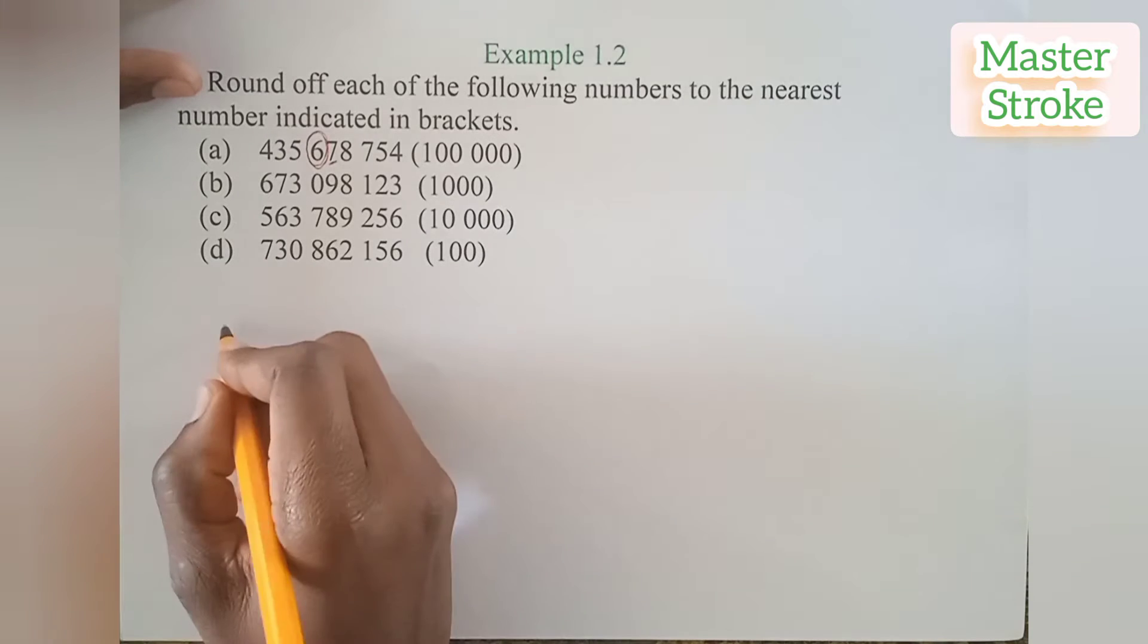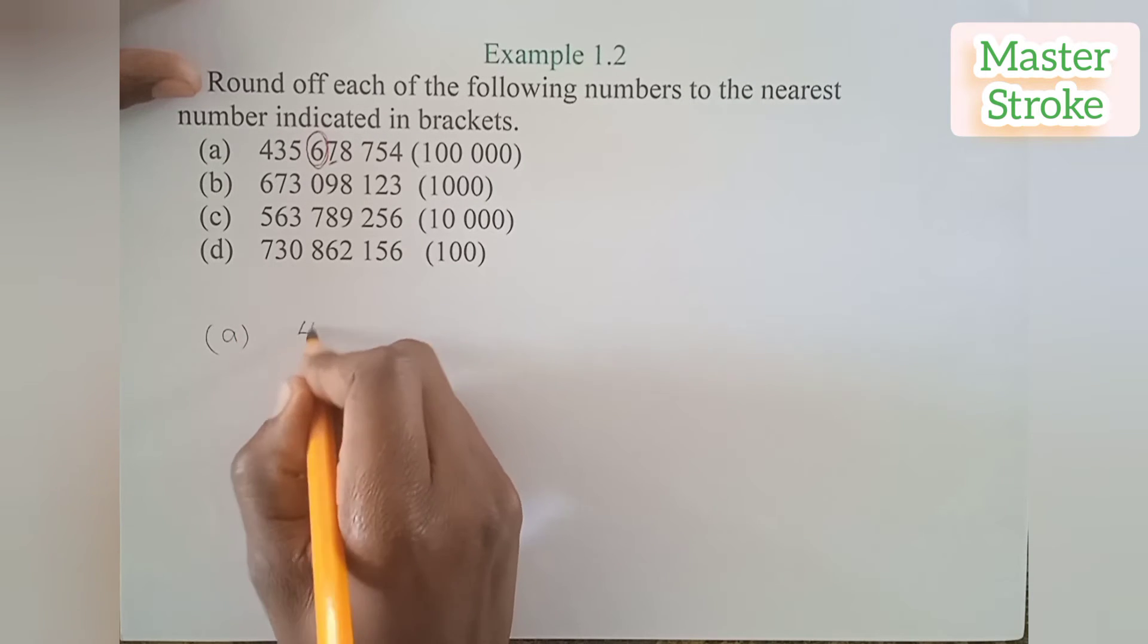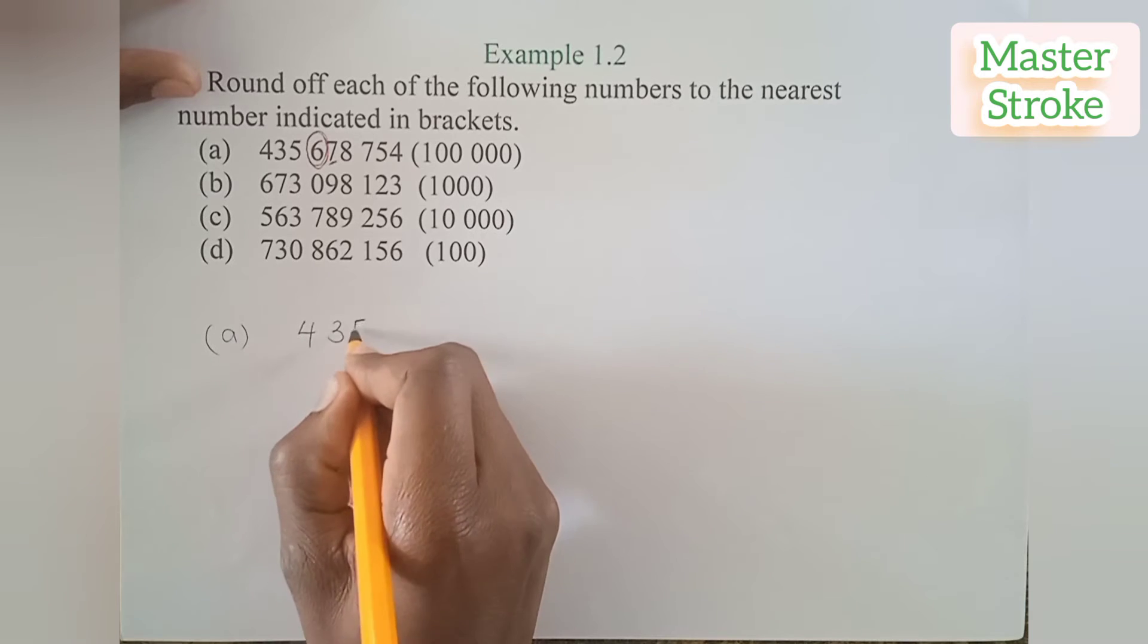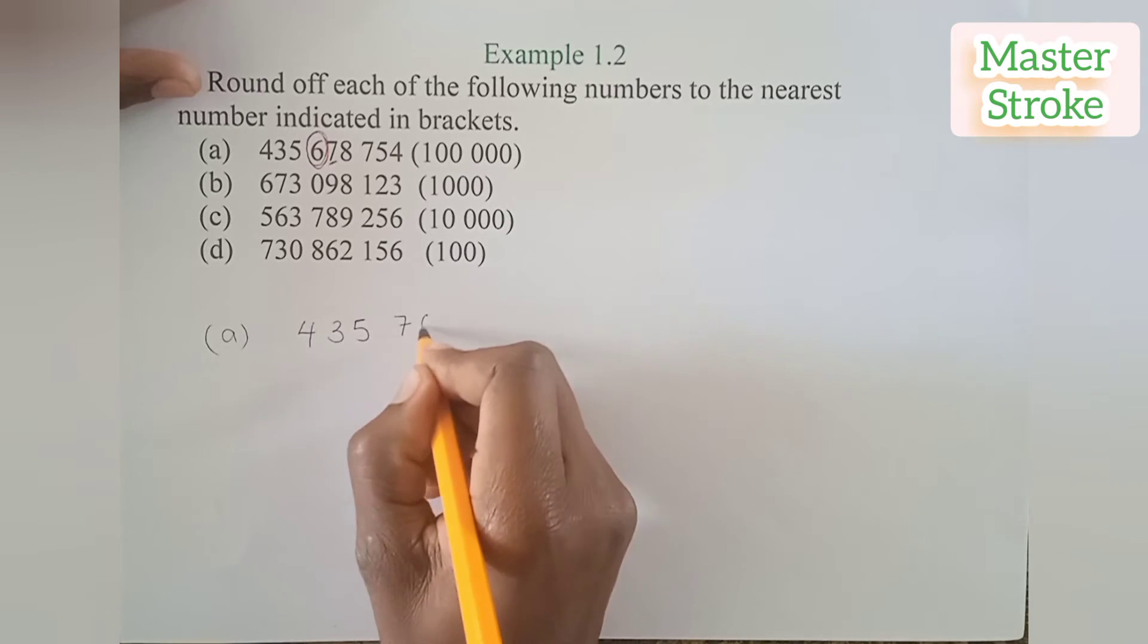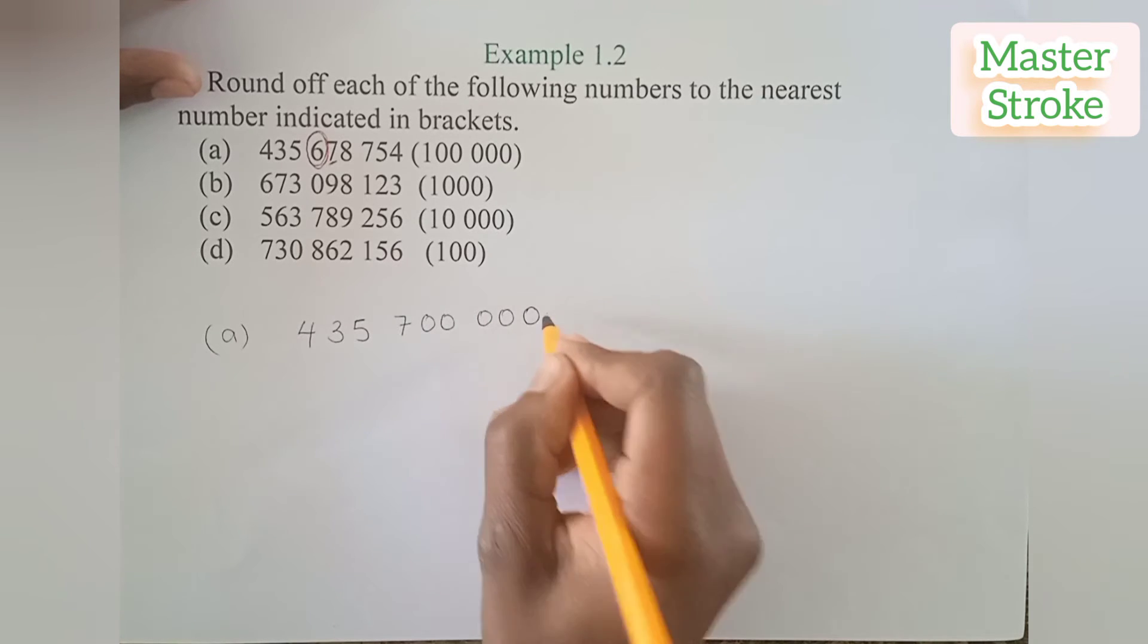Then seven is greater than five, therefore we round up, so the six becomes seven. So the answer would be five million seven hundred thousand.